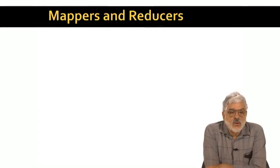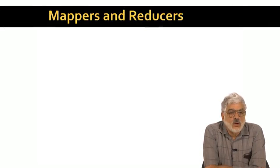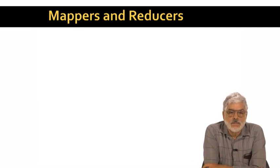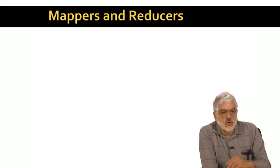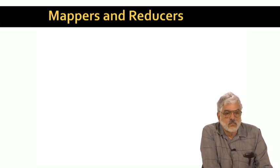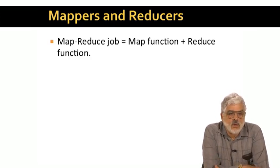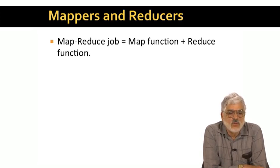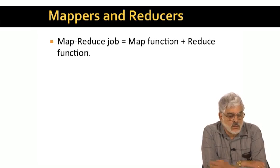I want to start by reviewing and introducing some notation for describing important components of a MapReduce job. We need to distinguish between map functions, map tasks, and mappers, and do the same for reduce. Remember, a MapReduce job is defined by a Map function and a Reduce function. These are the two pieces of code you have to write to make the job go. Everything else you do is really setting parameters for Hadoop or another system like it.